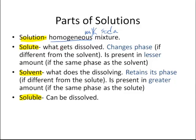Think about lemonade, orange juice, those kinds of things. Those are homogeneous mixtures and those are solutions. If you can think about all of the chemicals you saw on the table last year with numbers like 1M NaOH - when you saw things like that, that was a solution, a solution of sodium hydroxide. So solutions are made of two parts.